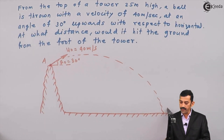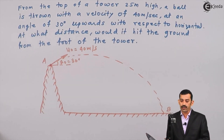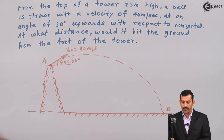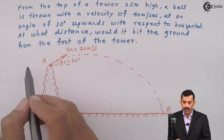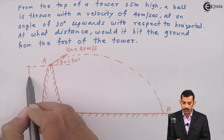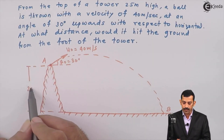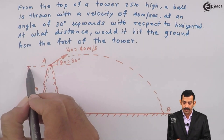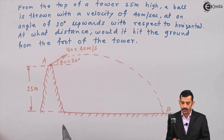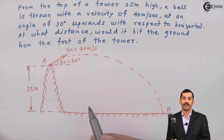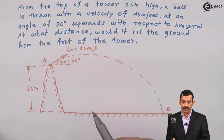The point where the ball strikes the ground is labeled B. The height of the tower is 25 meters. Drawing a horizontal line from the base of the tower, this height is represented as 25 meters. The known data are: u₀ = 40 m/s and θ₀ = 30°.